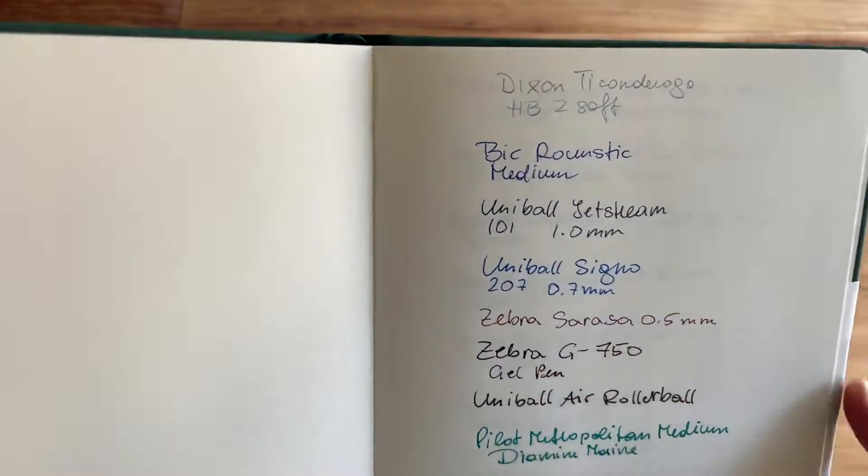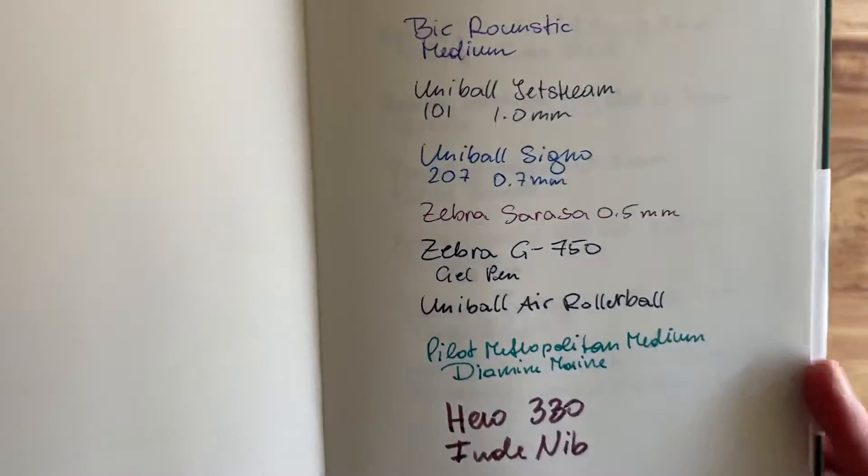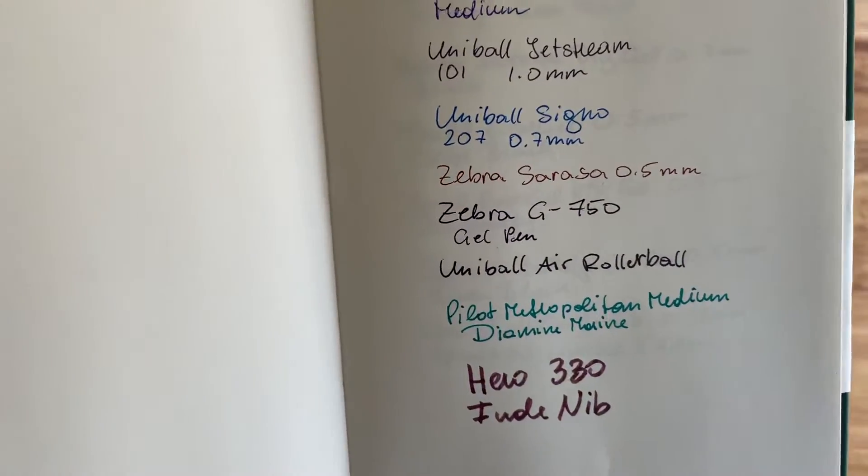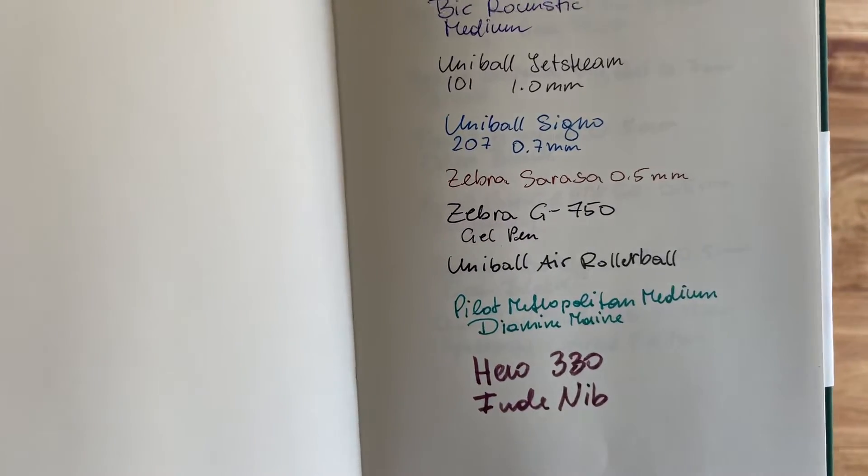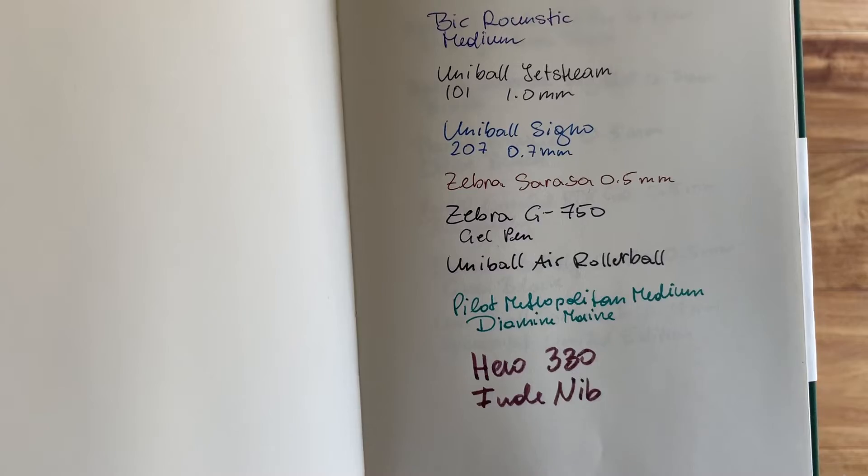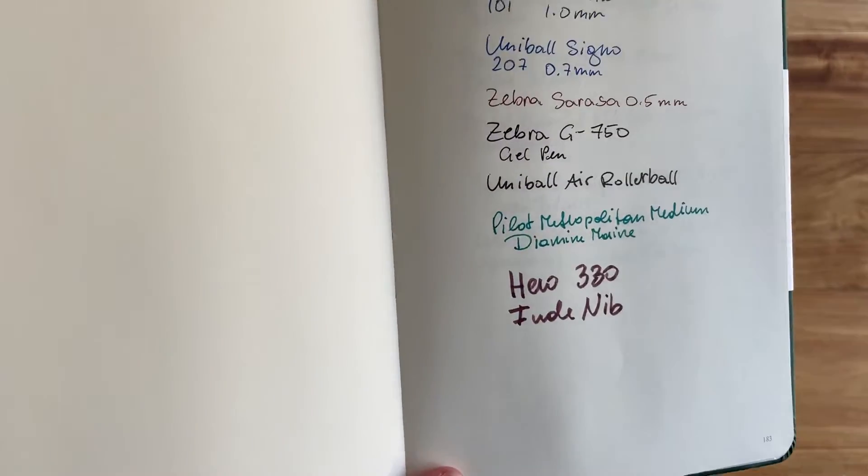So we have a pencil, ballpoint pen, a couple of gel pens, and then roller balls. And then we have the Pilot Metropolitan medium nib with Diamond Marine ink. And then the Hero 330 fountain pen with a Fuda nib and Diamond Merlot ink.